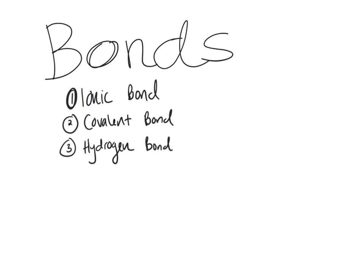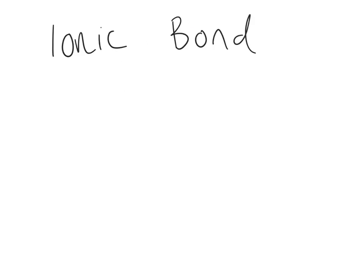We'll start with the ionic bond. Before getting into how an ionic bond works, it's important to first ask: what is an ion? An ion is an atom that has either a positive or a negative charge. We have two different names: a negatively charged ion is called an anion, and a positively charged ion is called a cation.